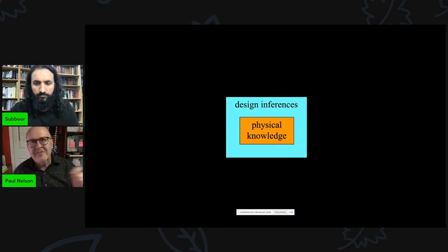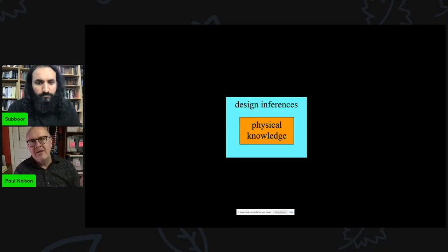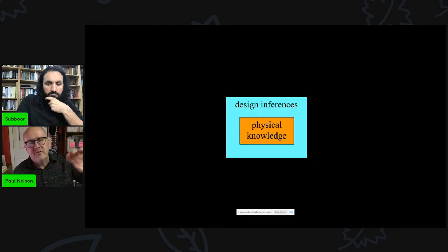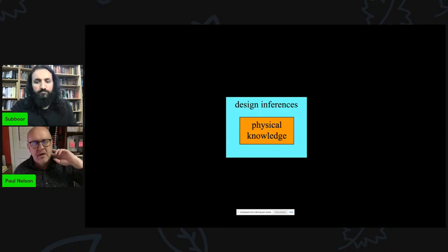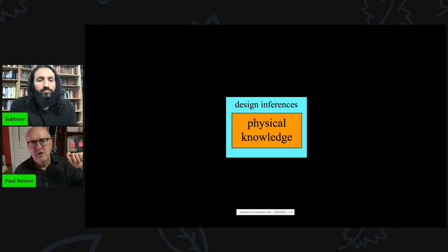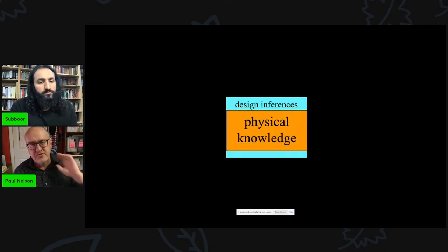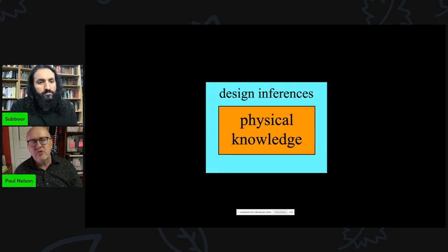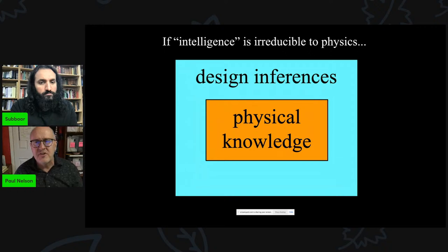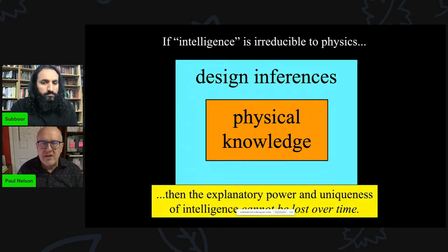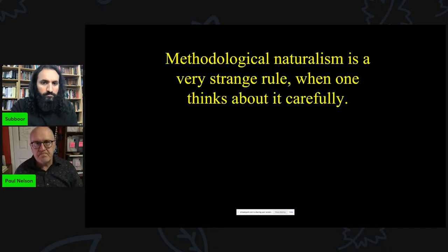If we locate an effect caused by intelligence — where intelligence means irreducible to physics — we are not going to find its corresponding cause in the box of natural causes, because it's not there. If intelligence is in some important sense irreducible to physics, the toolkit of science has grown smaller since Newton's time. Let's define intelligence as irreducible to physics and watch what happens as physical knowledge grows: design inference grows correspondingly, because if intelligence is irreducible to physics, its explanatory power and uniqueness cannot be lost over time. It will always be an explanatory option in addition to what we know about the bottom-up story. This tells you methodological naturalism is a very strange rule. What if intelligent causation were true?